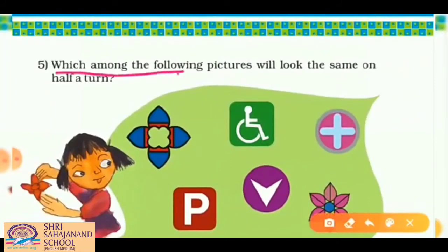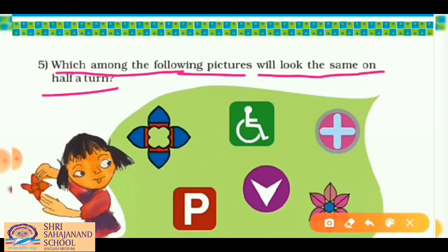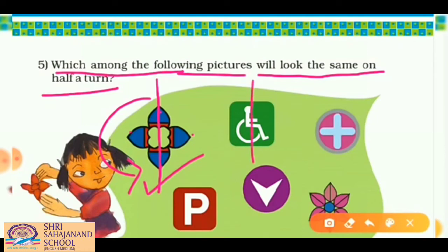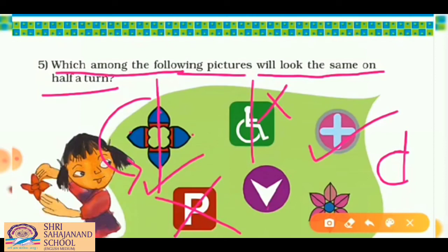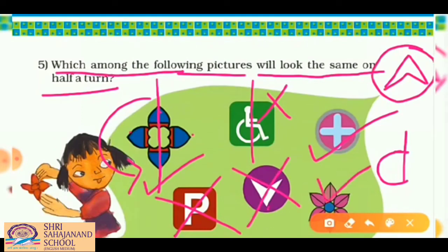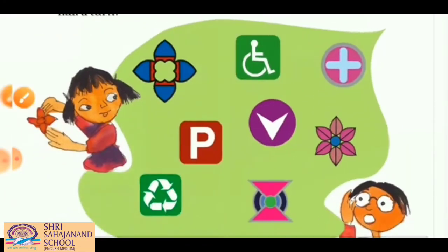Next question: which among the following six pictures will look the same on a half turn? The first picture — all sides have the same design, so yes. The second — not equal when divided in half, so no. The letter P in opposite direction looks different, so no. The arrow also looks different after a half turn, so no. The last one does look the same.